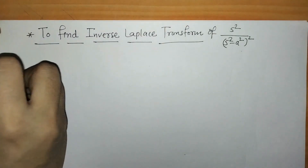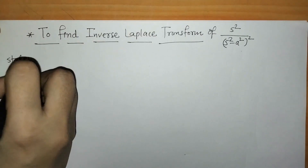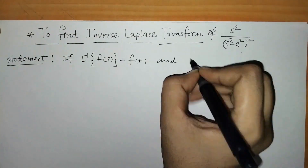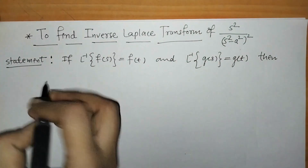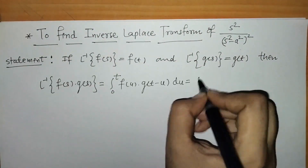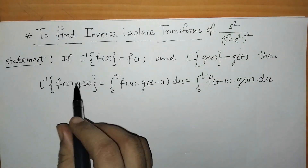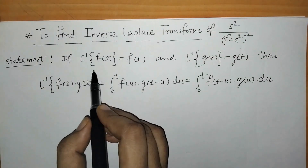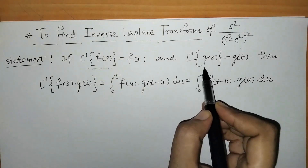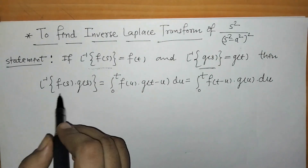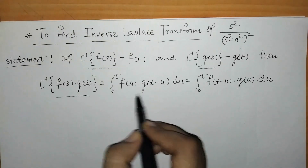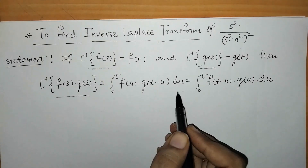First, we have to write down the statement of the convolution theorem. This theorem states that if we know the inverse Laplace transform of F(S) and G(S), then the inverse Laplace transform of their product can be found by using this integral.